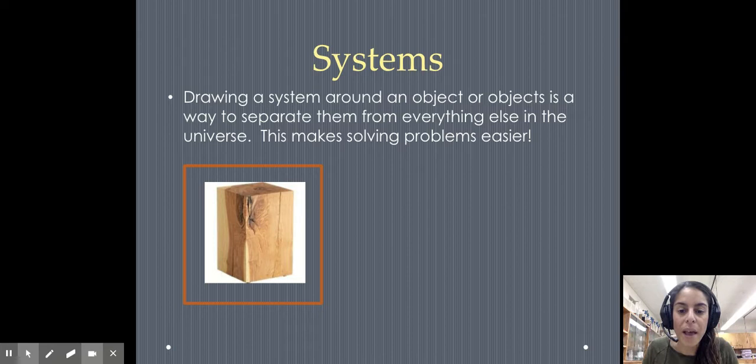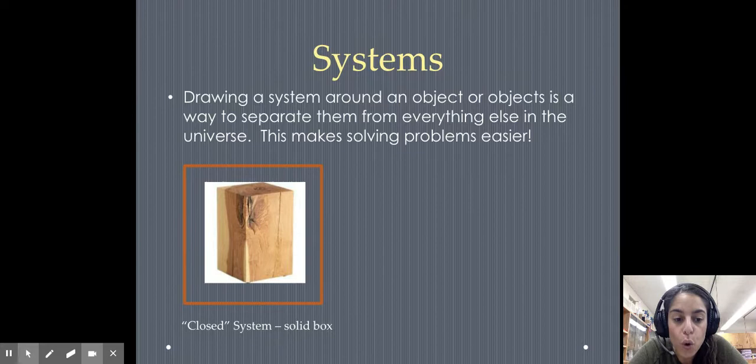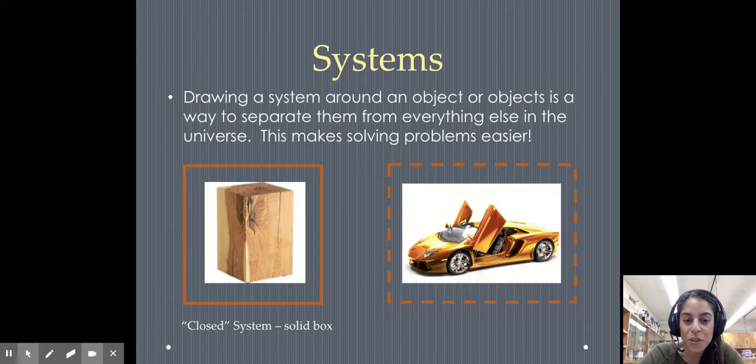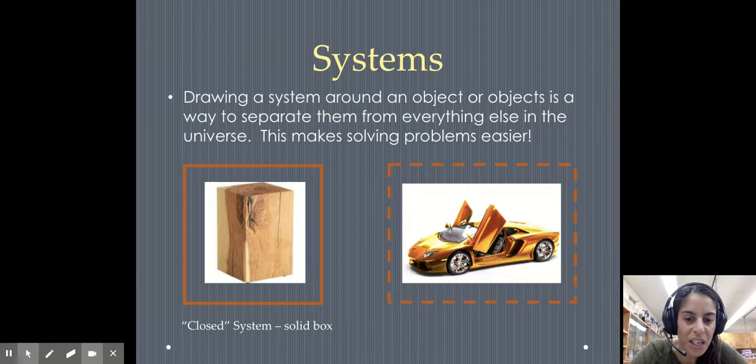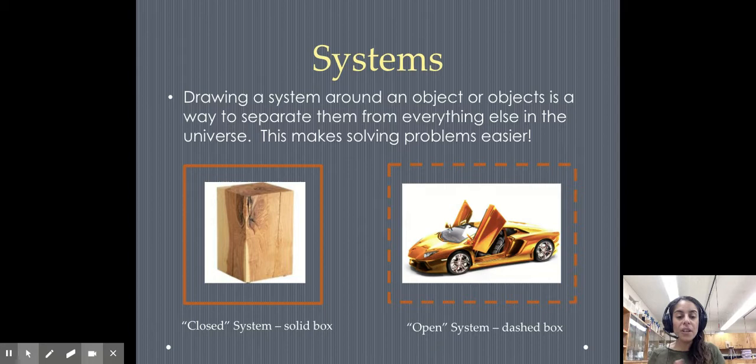Let's say we're trying to talk about this wood block that's part of this system. So what you do is you literally draw a box around it and you're saying, I am talking about just this wood block. That's considered a closed system. You have to do a solid line. An open system, you do a dashed line. That's a dead giveaway.